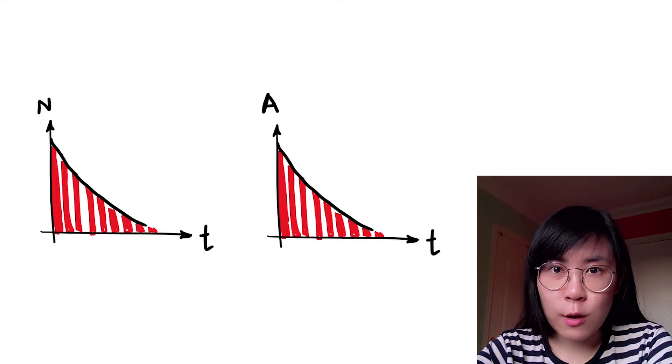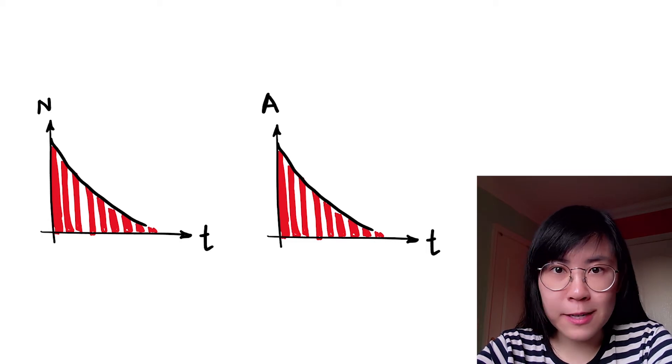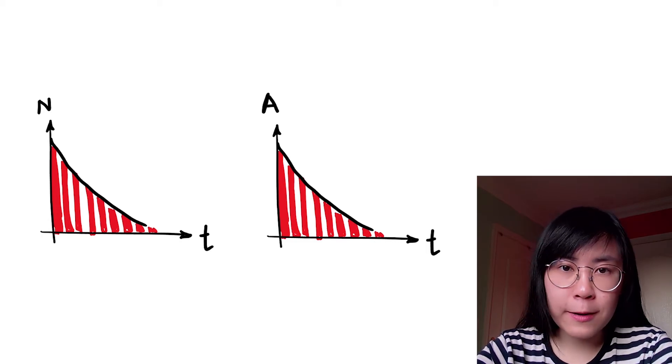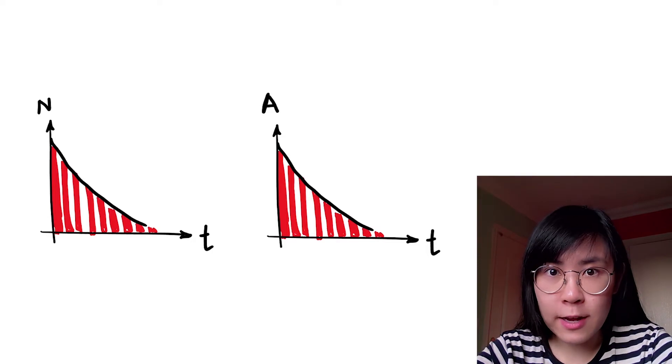Looking at the two graphs we can see that there's some sort of exponential relationship between the number of nuclei and time and the activity against time. So let's derive the corresponding decay equation.